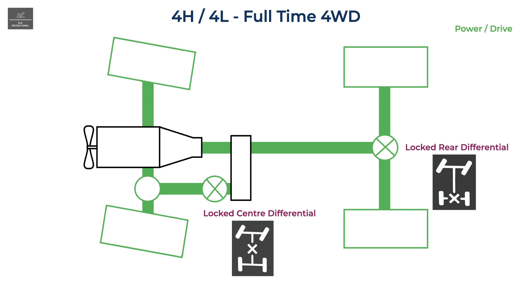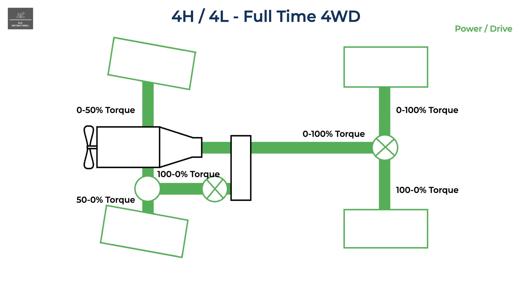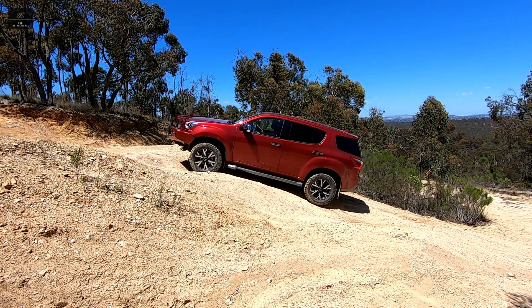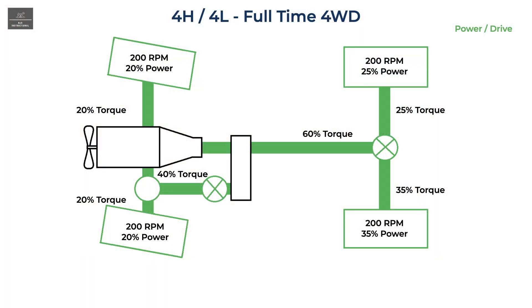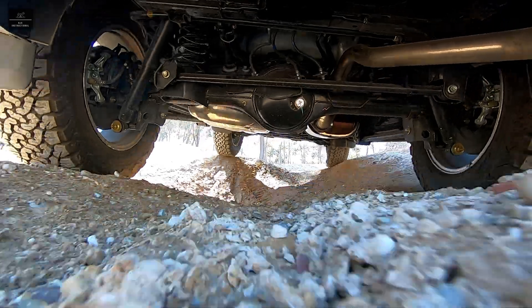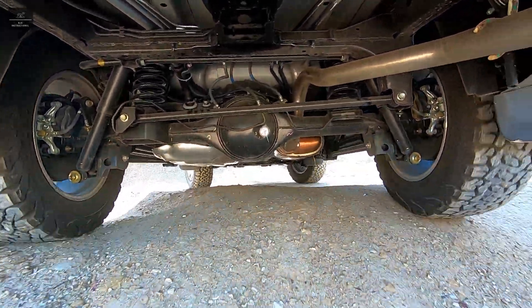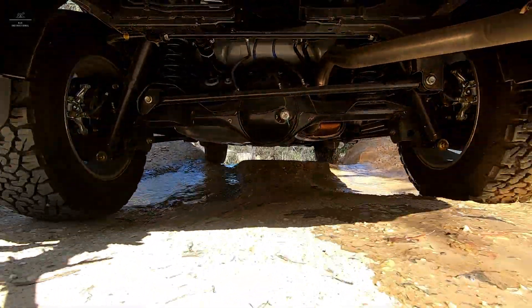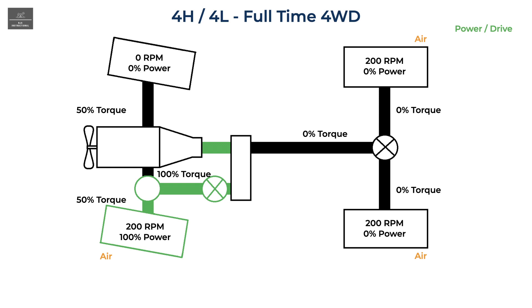By locking the center and rear differentials, torque can be varied depending on where it is needed — up to 100 percent of available torque could be sent to the front or rear drive shafts. More realistically, say the vehicle is climbing a hill and more torque is required at the rear: you may have 60 percent of available torque sent to the rear differential, split at 35 percent to the rear left wheel and 25 percent to the rear right wheel. The remaining 40 percent torque is sent to the front differential, which, being still open, equally splits that torque to 20 percent per wheel.